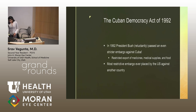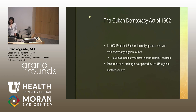The Cuban Democracy Act of 1992 came a few years after this significant decline in GDP. President George H.W. Bush reluctantly passed this act, which placed an even stricter embargo against Cuba. The one loophole in the existing embargo — that the U.S. could trade food, medical supplies, and medicines with Cuba — was further restricted. President Clinton called this the most restrictive embargo ever placed by the U.S. against any country.